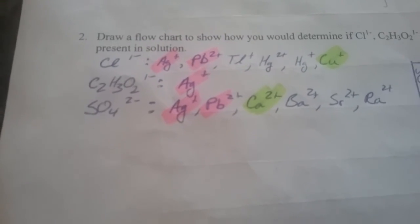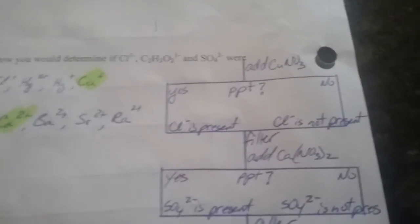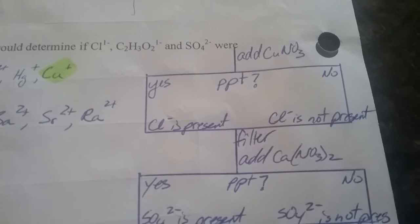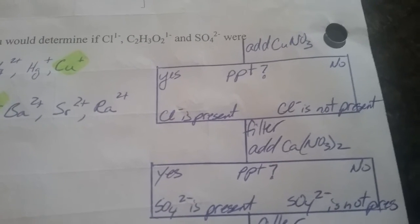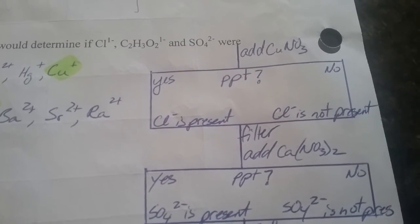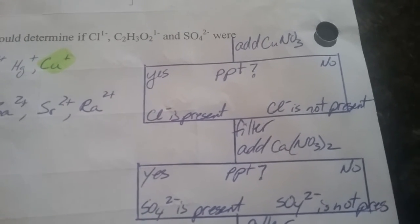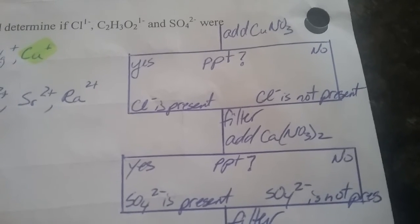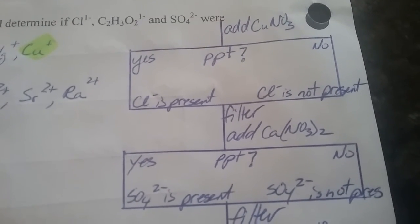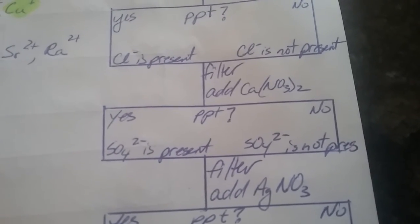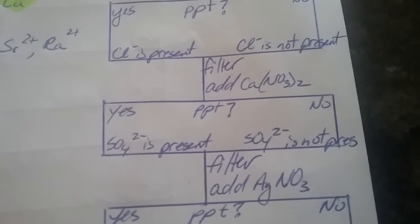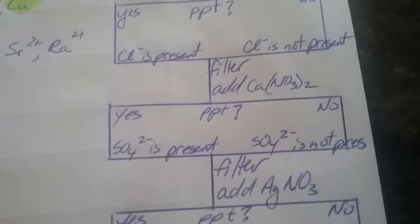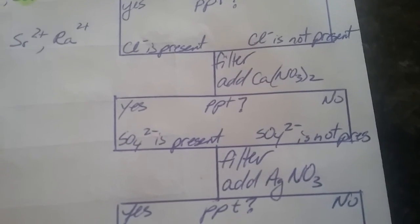There are multiple solutions to this problem. Step one: we're going to add copper(I) nitrate, and of course we ask the question — is there a precipitate? If yes, then chloride ions are present. If no, then chloride ions are not present. If we do get a precipitate, we should filter before going on to step two. In step two, we've chosen to use calcium nitrate. We use nitrates because they have high solubility and won't create a false positive. If a precipitate forms, sulfate ions are present.